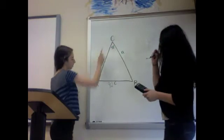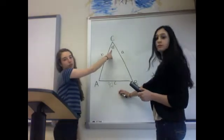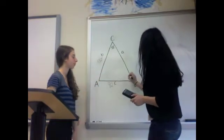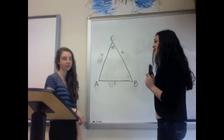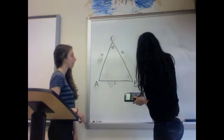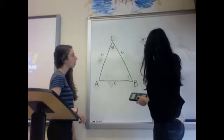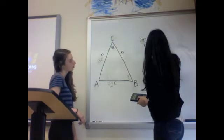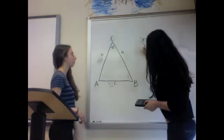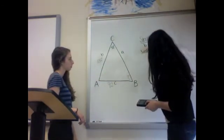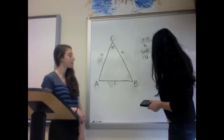In triangle ABC, side C is 92, side B is 132, and angle C is 42 degrees. What is angle B? So we solve this problem using the law of sines: sine B over B equals sine C over C. So you plug in these numbers and you get sine of B over 132 equals the sine of 42 over 92.